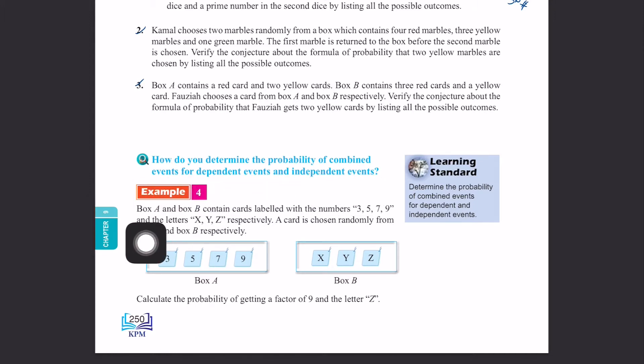Look at this example. Box A and box B contain cards labeled with numbers 3, 5, 7, 9 and letters X, Y, Z respectively. A card is chosen randomly from box A and box B respectively. Calculate the probability of getting a factor of 9 and the letter Z.